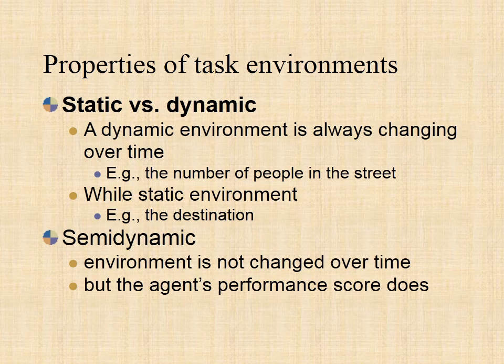If the environment can change itself while an agent is deliberating, then such an environment is called a dynamic environment; else it is called a static environment. Static environments are easy to deal with because an agent does not need to continue looking at the world while deciding on an action. However, for a dynamic environment, agents need to keep looking at the world at each action. Taxi driving is an example of a dynamic environment, whereas crossword puzzles are an example of a static environment.